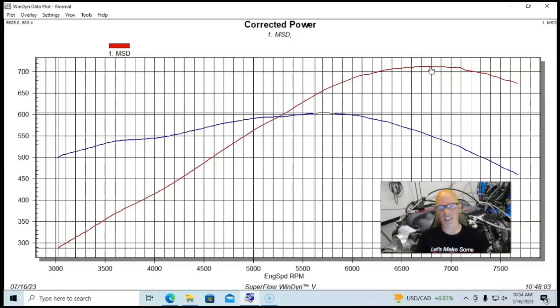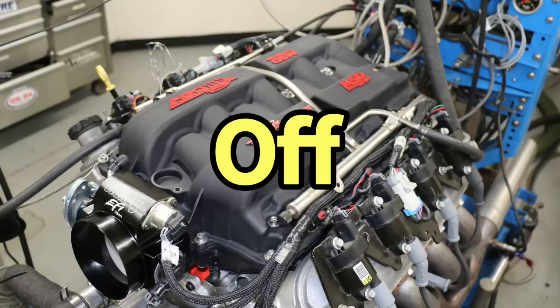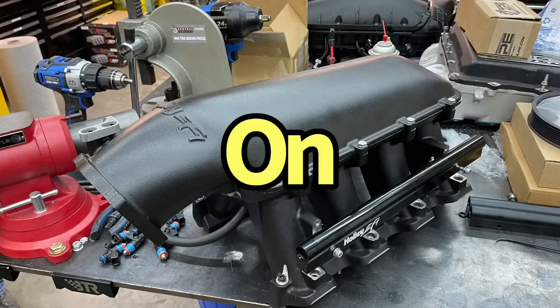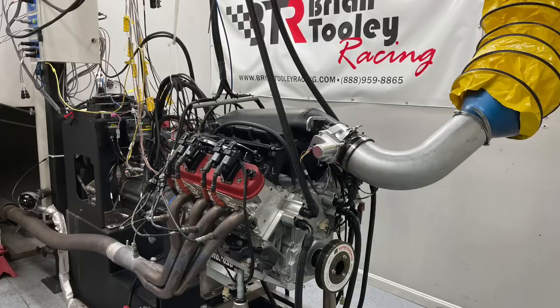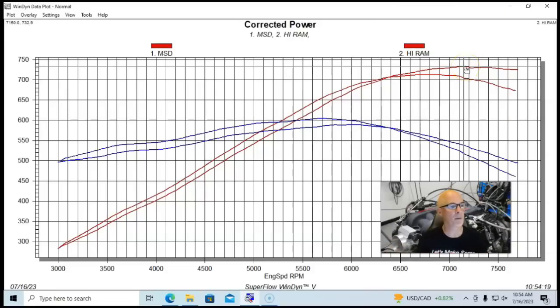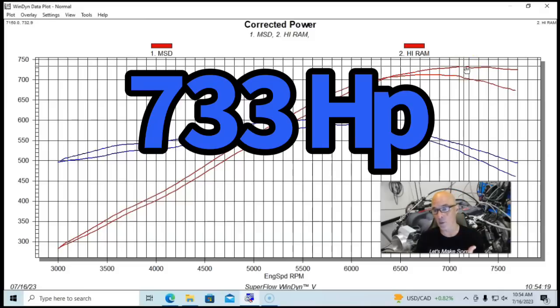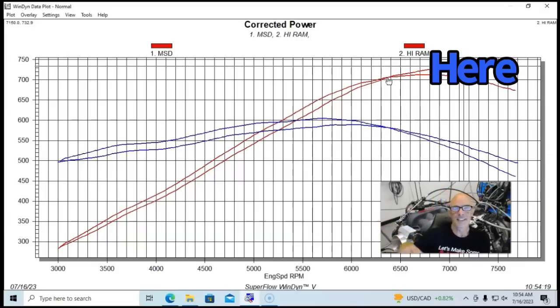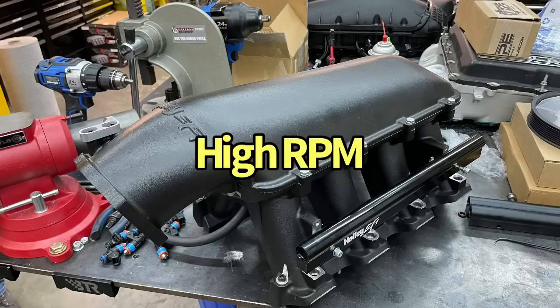Here's what happened when we replaced the MSD with a Holly High Ram. You could see the High Ram in typical fashion, long runner short runner kind of thing. This is normally what happens. It did indeed make more peak power. We're up to 733 horsepower, so it did very well and made more peak power from about 6400 on up. If you're looking at that part of the curve, definitely these shorter runner manifolds like the High Ram are an option.